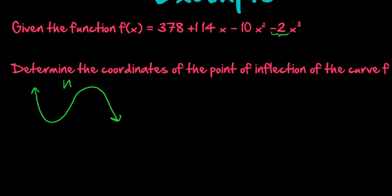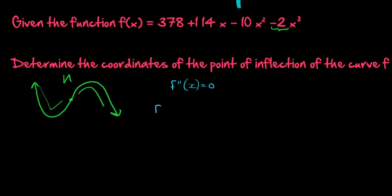The point of inflection is the point where it stops being convex, this valley shape, and starts being concave, this cave shape. How do we find the point of inflection? We make the second derivative equal to zero, and then we solve for x, substitute x into the function to get the y value of the coordinate. So we need the second derivative.